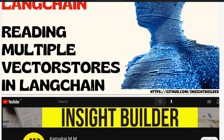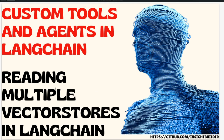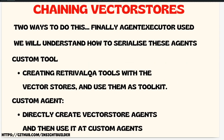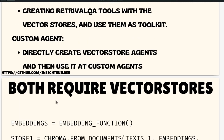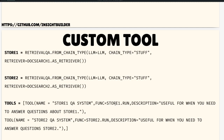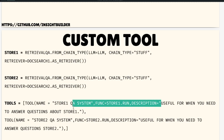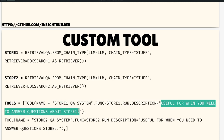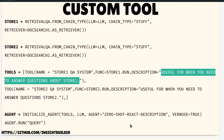With this, I primarily wanted to discuss reading multiple vector stores in LangChain. You can experiment with your embeddings, your texts, and especially the description. The major point that changes everything is the description — please provide it carefully and properly.